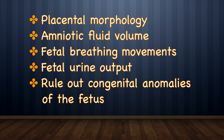Placental morphology may also help in detection of IUGR. Acceleration of placental maturation may occur with intrauterine growth restriction. Amniotic fluid volume, fetal breathing movements, and urine output are also helpful in diagnosis. Type 2 IUGR is usually associated with oligohydramnios. It is also important to rule out congenital anomalies of the fetus in early-onset symmetrical IUGR.